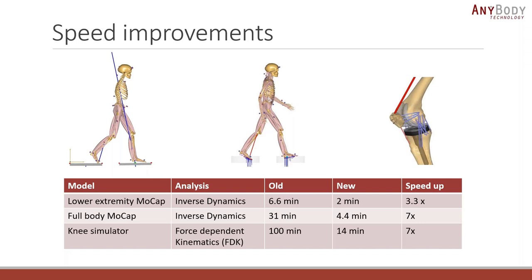Another case where the new algorithm really shines is when you use force-dependent kinematics. That's because force-dependent kinematics basically wraps around existing models and runs them many times for each iteration, so the wrapping algorithm starts to really matter. The knee simulator model in our model repository also speeds up by a factor of 7 when you run it with the new algorithm.